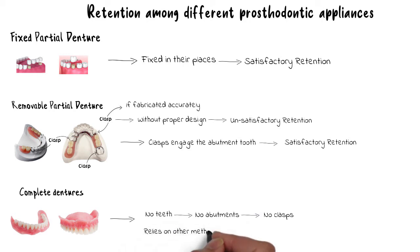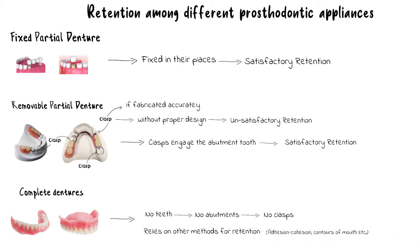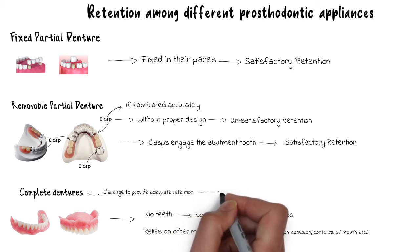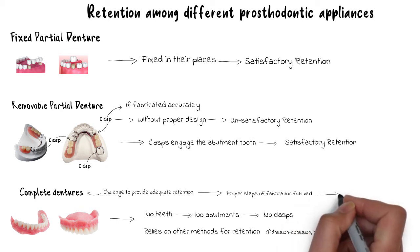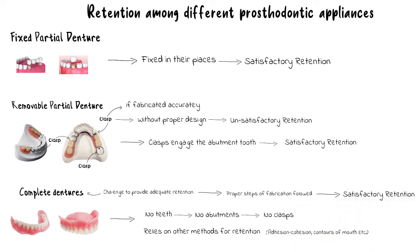Instead, complete dentures rely on other methods for retention, such as the forces of adhesion and cohesion, vacuum, natural contours of the mouth, and many others. Fabricating a retentive complete denture seems more of a challenge than fabricating a retentive removable partial denture. That being said, if all of the steps of complete denture fabrication are accurately followed, then adequate retention can be achieved in most cases of complete denture.